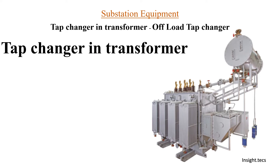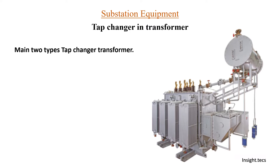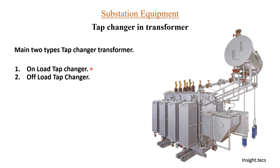In today's video, we are going to see about offload tap changers. Mainly there are two types of tap changers in a transformer. The first one is the onload tap changer and the second one is the offload tap changer. As the name suggests, in the onload tap changer, we have to change the tap positions when the transformer is in on condition — when the transformer is live, we can change the taps. In offload tap changers, when the transformer is in off condition, we have to turn off the transformer first, and only after that we can change the tap settings.